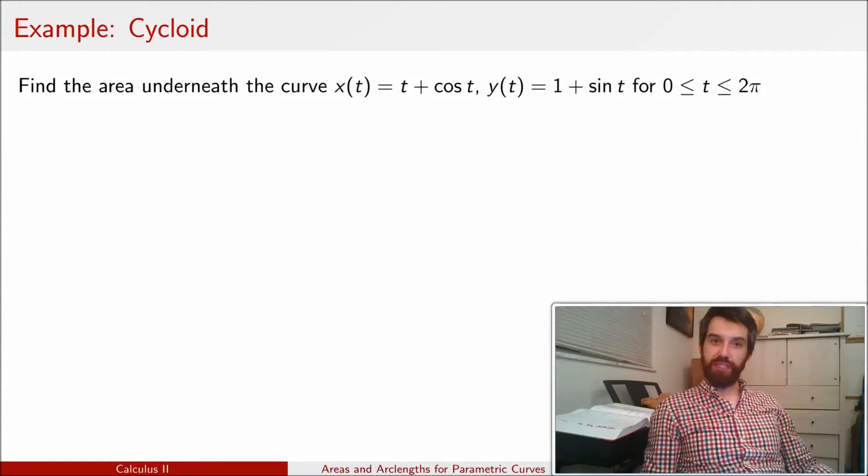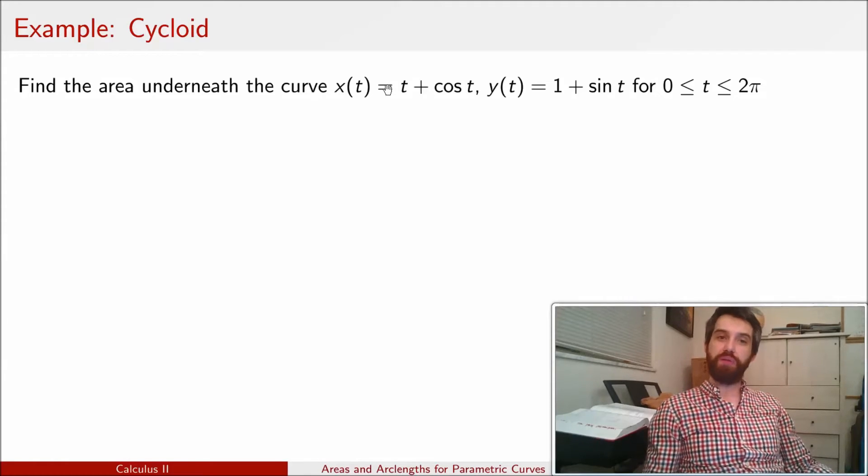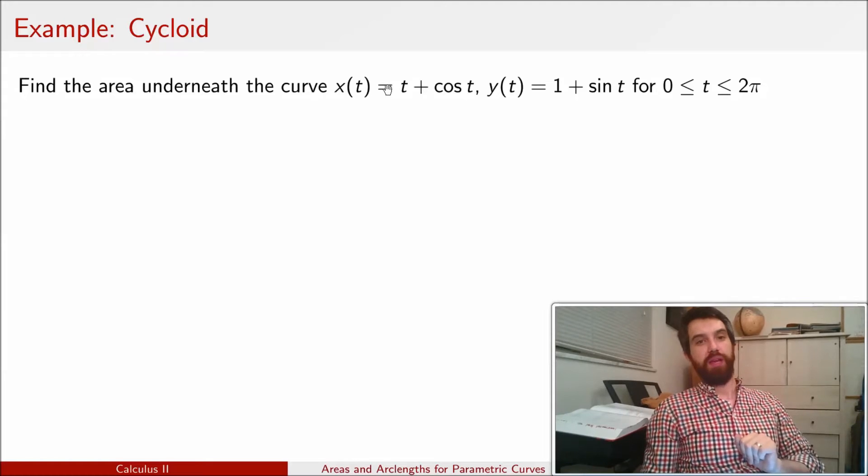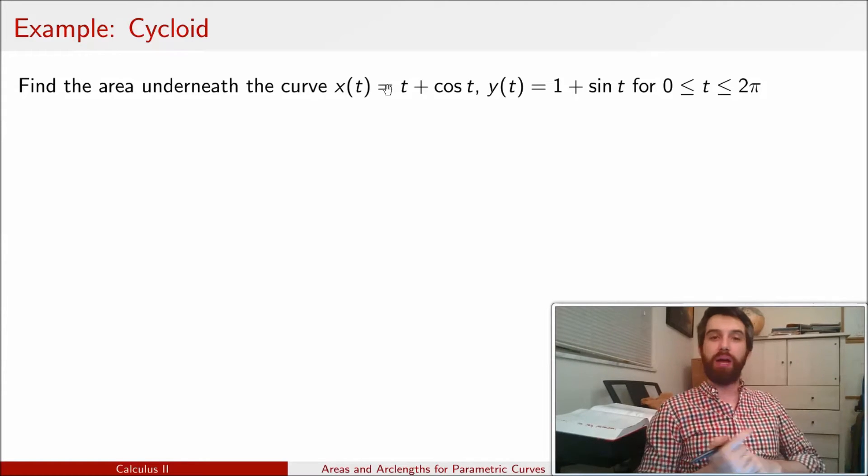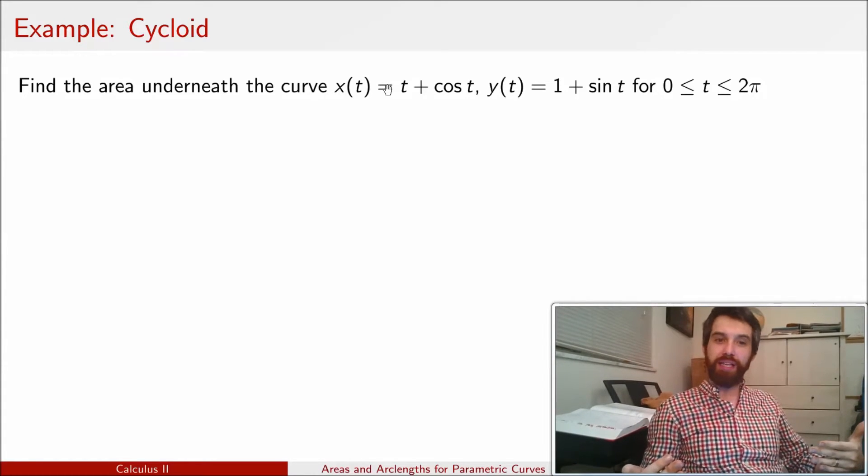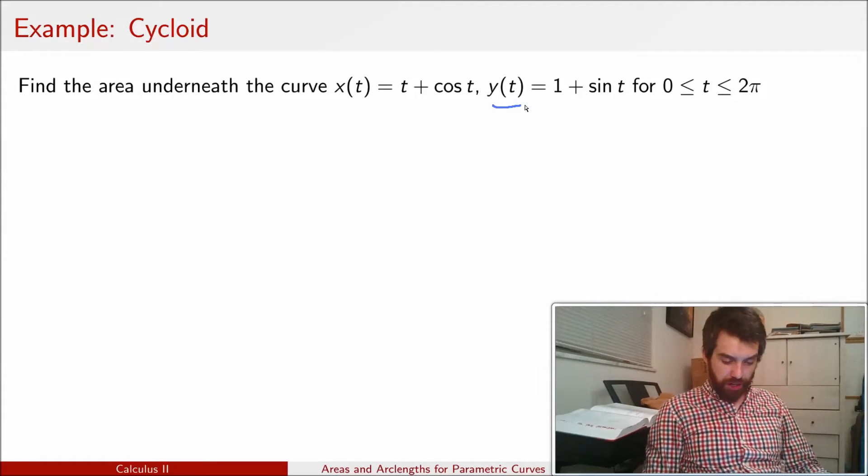So let's see a specific example. Here I have some parametrically described curve. And I have two endpoints of it, zero and two pi. And I might think that I could just go and plug this into that formula, the interval from zero to two pi, I could plug all this stuff in. However, what we need to verify is that that condition that the y values are always positive is indeed true in this domain.